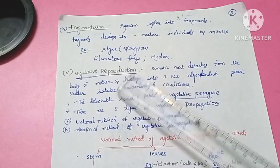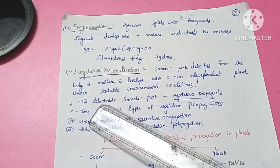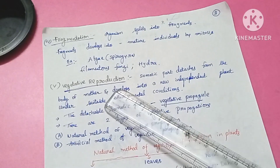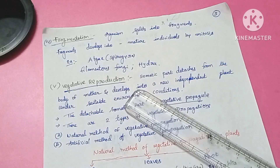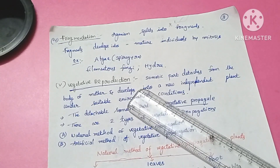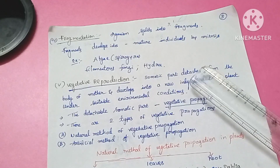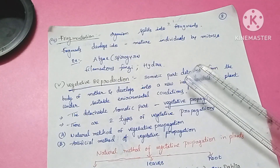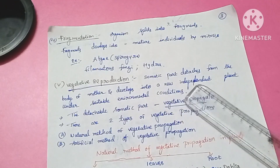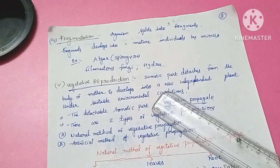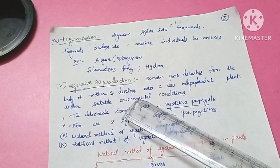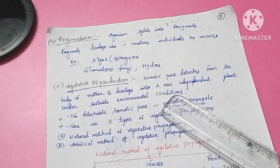The next concept in asexual reproduction is vegetative propagation. In vegetative reproduction, the somatic part of the plant detaches from the body of the mother plant and develops into a new independent plant under suitable conditions. The detachable somatic part of the plant is called a vegetative propagule.